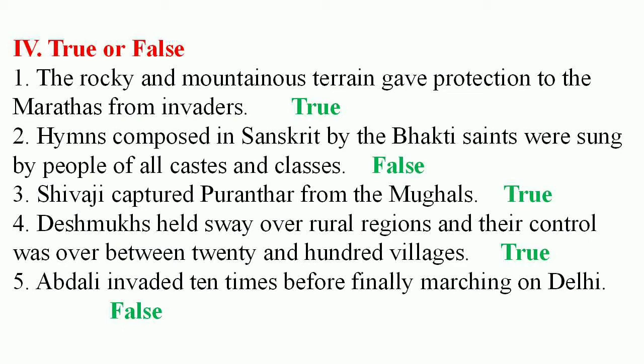Fourth question: Deshmukhs held sway over rural regions and their control was over between 20 and 100 villages. The answer is true. Fifth question: Abdali invaded 10 times before finally marching on Delhi. The answer is false.